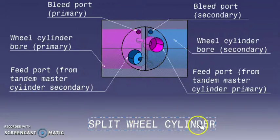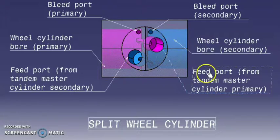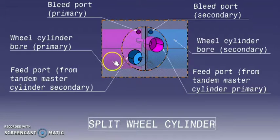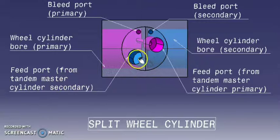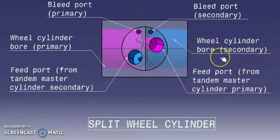Split wheel cylinder separates a leading shoe piston and trailing shoe piston. Brake fluid from the tandem master cylinder primary enters through this feed port and pushes the leading shoe piston. Brake fluid from the tandem master cylinder secondary enters through this feed port and pushes the trailing shoe piston.